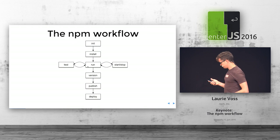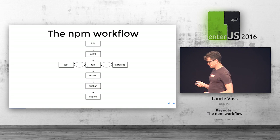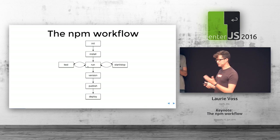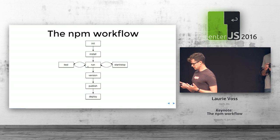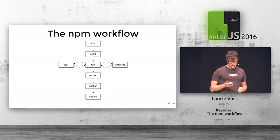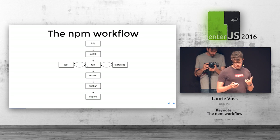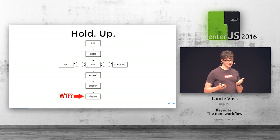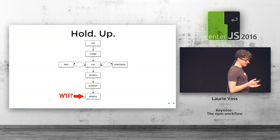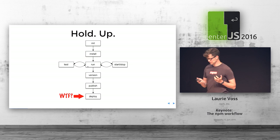Here's the core of the NPM workflow, as simple as it can get. You initialize your project, you install your dependencies, you run, you test, you run, you test. Eventually you decide it's good enough to show the world — or you just get sick of working on it — and you bump a new version and publish your application to the registry, and the registry triggers your production deploy. Except there's no deploy command — or is there? As of two weeks ago, we released webhooks, which do let you hook deploys into your NPM workflow, and I'm going to talk about that at the end.